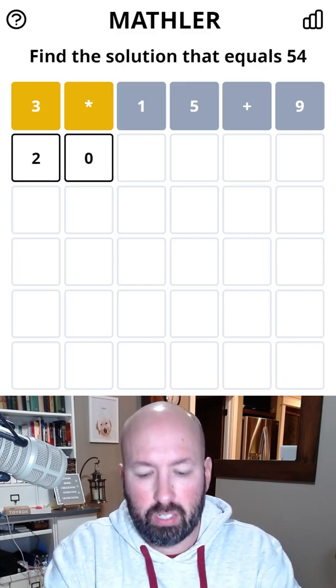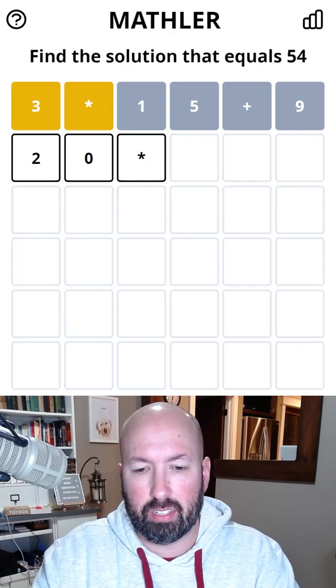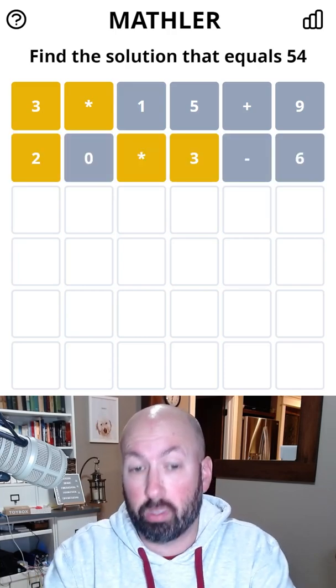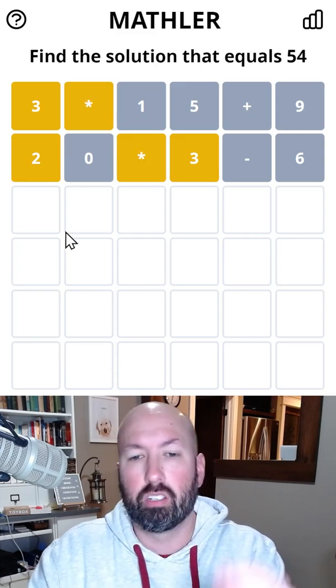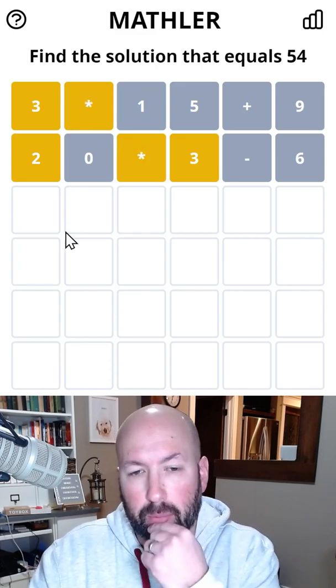I'm going to go with 20 times 3 minus 6. Okay, so there's no subtraction, so it's got to be multiplication and then division. And in fact, we can't have a multiplication sign here, so we must divide first and then multiply.